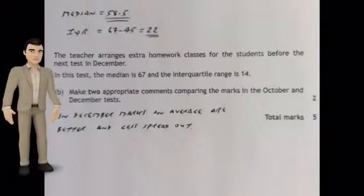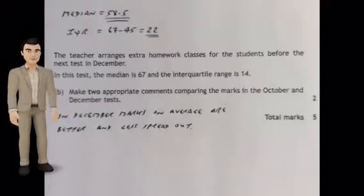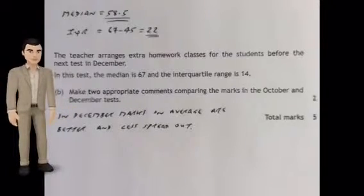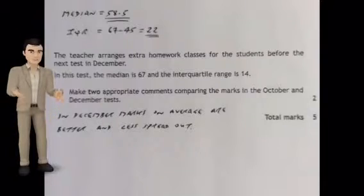The teacher arranges extra homework classes for the students before the next test in December. In this test, the median is 67 and the IQR is 14.